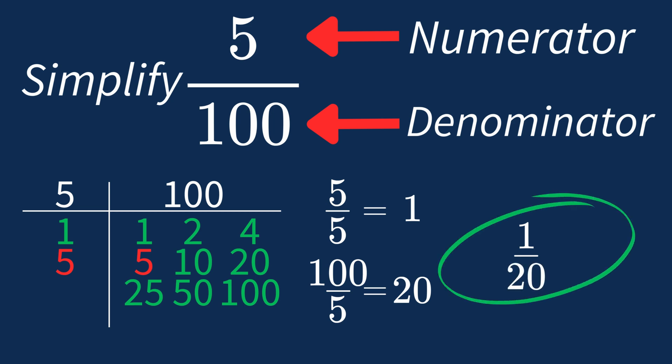And we know that 1 over 20 is in its simplest form, because the only common factor between 1 and 20 is 1. And when 1 is the largest common factor, we know that fraction is already in its simplest form. Thank you for watching and I'll see you in the next one.